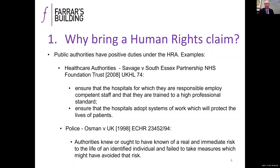The case of Osman v UK is a very important case. It sets out the Osman principles: where authorities know or ought to have known that there was a real and immediate risk to life, and they fail to take measures to avoid that risk, there will be a breach. That case related to Article 2, but it would also relate to Article 3 or other articles, and would apply not just to the police but to other responders. The Osman principles have now been firmly established in domestic law.